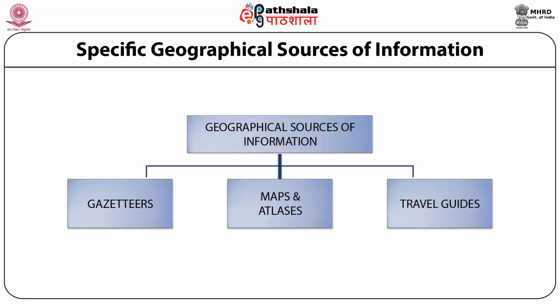A gazetteer may be defined as a geographical dictionary, differing from the index to an atlas in that it is usually more comprehensive. A good gazetteer includes names of towns, villages, rivers, mountains, lakes, and other geographical features, along with population, longitude, latitude, and in some cases brief or even long entries tracing the history, economic, and political features of the particular place.